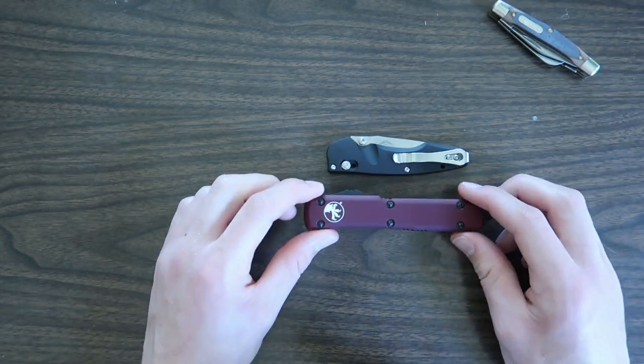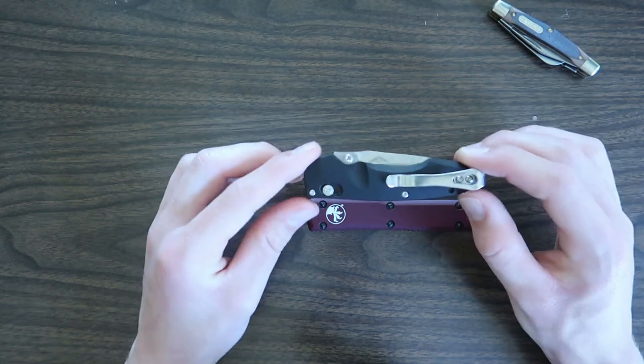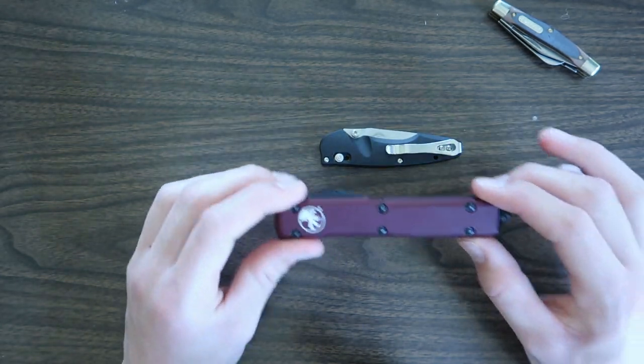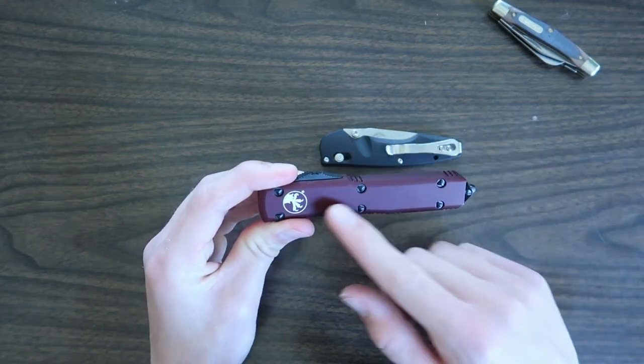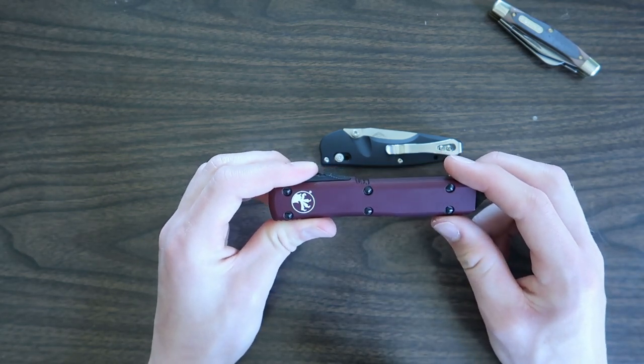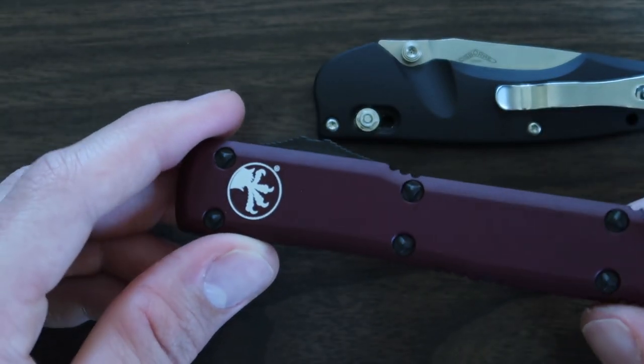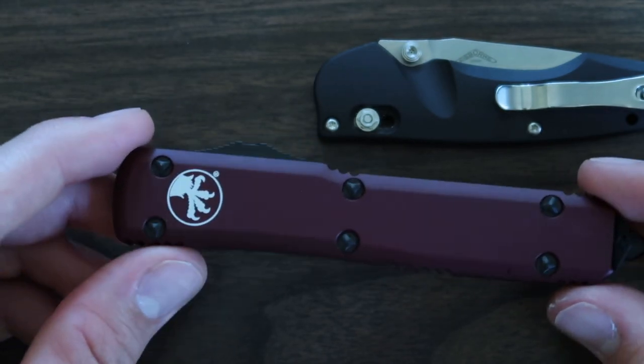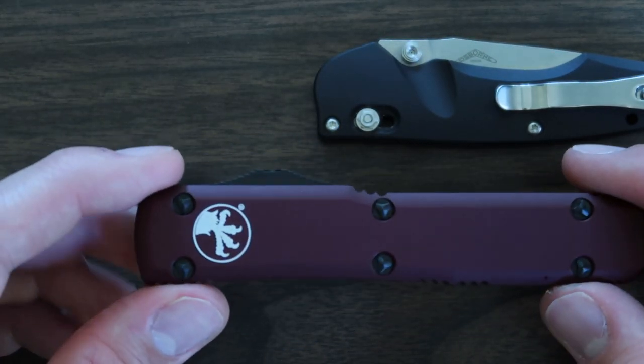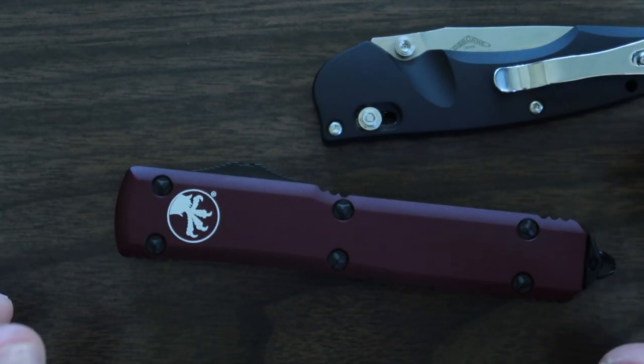Now on the Benchmade Emissary, if you notice, it has some regular hex nuts holding the knife together, and you can take these apart. However, on the Microtech Ultratech, there are custom-built screws holding this knife together. I'm going to try to zoom in on them and show you guys better. The heads of the bolts in the Microtech Ultratech knife are in the shape of a triangle shape, and you cannot just go out and buy a wrench that will be able to loosen these up. Instead, you have to send the knife to the Microtech factory and they will take the knife apart and fix it for you.